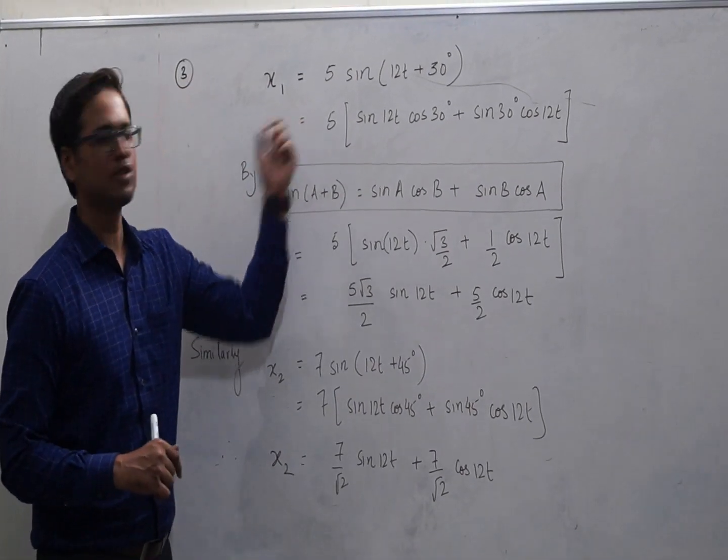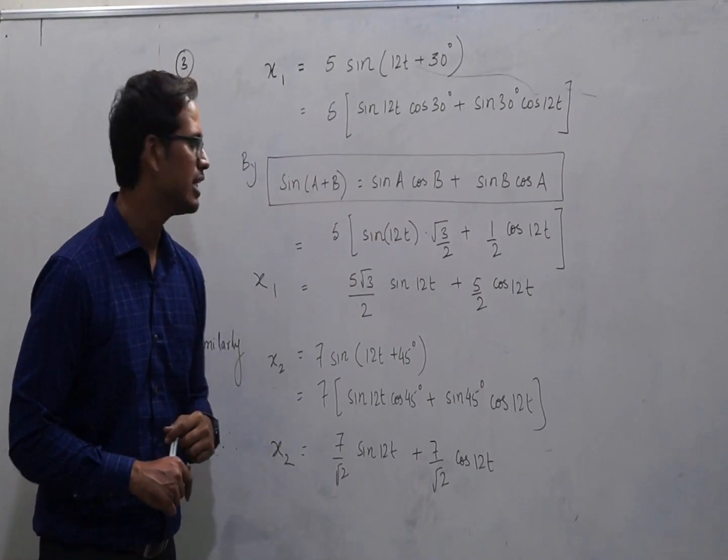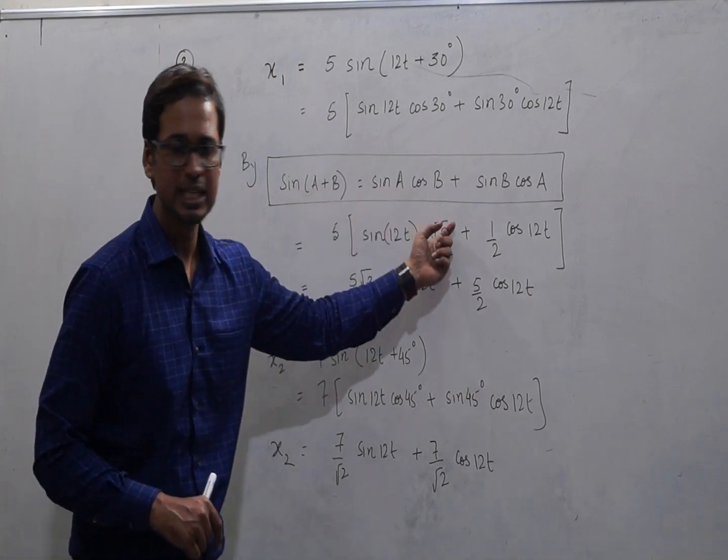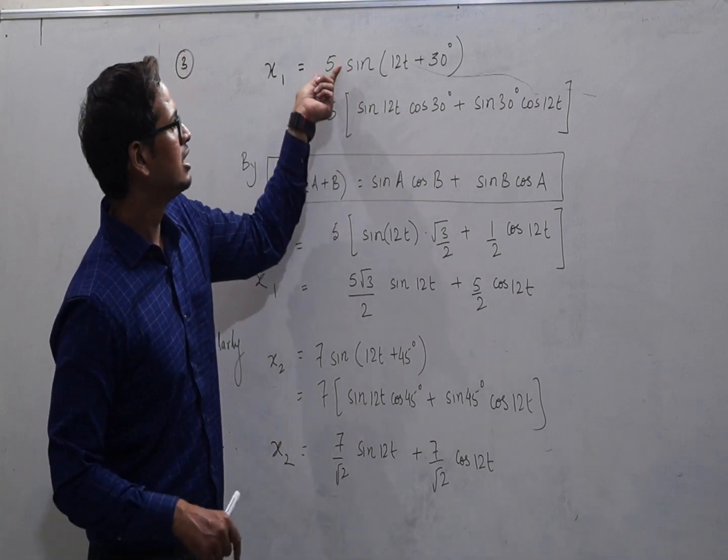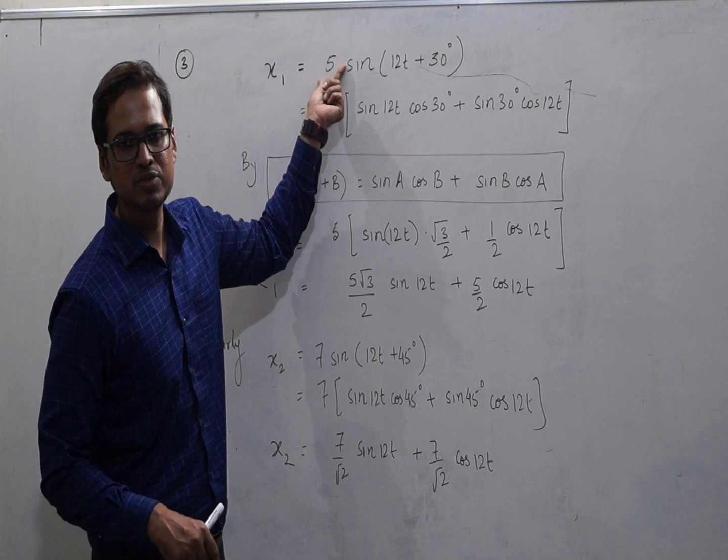Now for solving this problem, we will be using this compound angle trigonometric identity which says sine of a plus b is sine a cos b plus sine b cos a. As clearly seen here, this 5 will not be affected because that is the amplitude of this function.